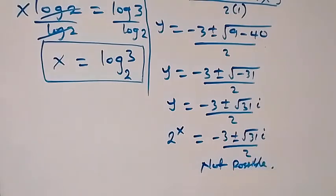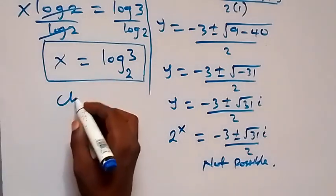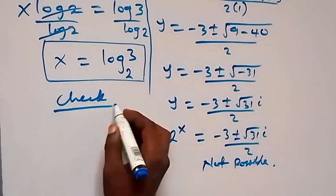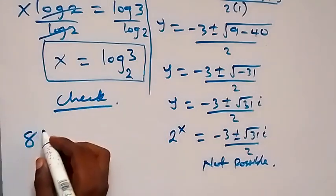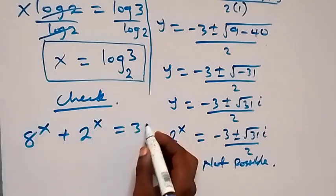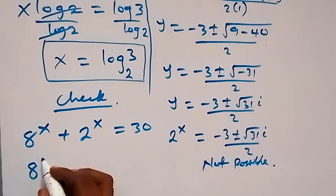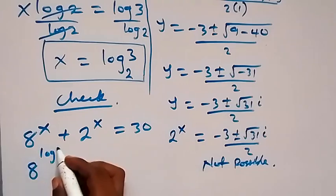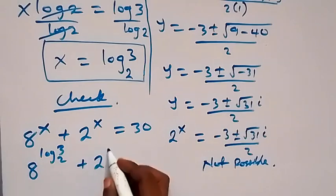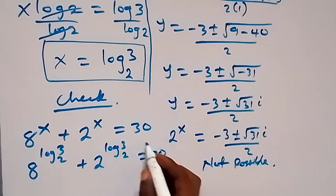So the solution to this problem is x equals to log 3 base 2. Let's check if this satisfies the original equation. We have 8 raised to power x plus 2 raised to power x equals to 30, and x is log 3 base 2. So we substitute: 8 raised to power log 3 base 2, plus 2 raised to power log 3 base 2, equals to 30.